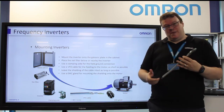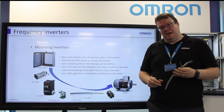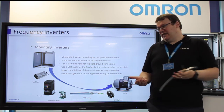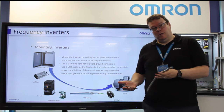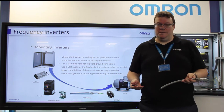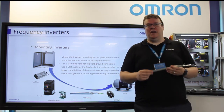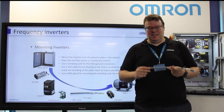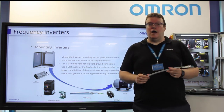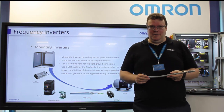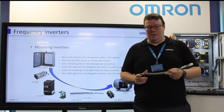So the best low-impedance path back to the inverter might then be through, for example, a sensor cable or some comms cables. That's why we recommend using proper 360-degree earthing glands, both on the motor and on the inverter.